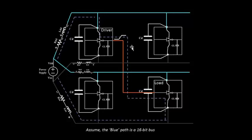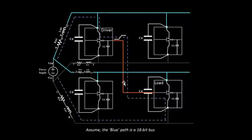We can't add decoupling capacitors for each and every element — it's not feasible. This particular line has to be taken care of by the power supply, and the power supply is sitting at some distance from this line. So there is always a possibility of a voltage drop. What you see as VDD at the source might not be VDD at this line — it might be something less.